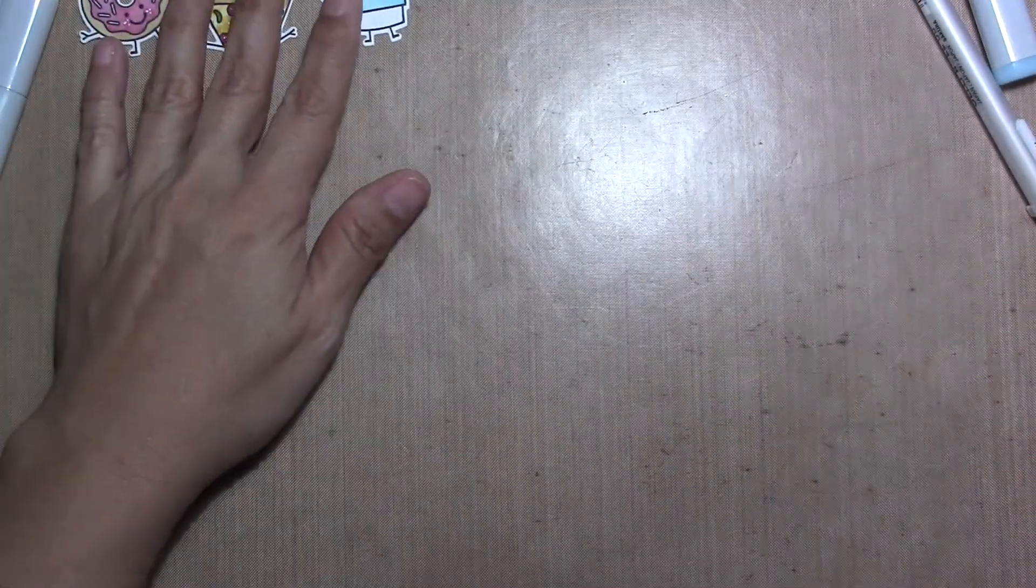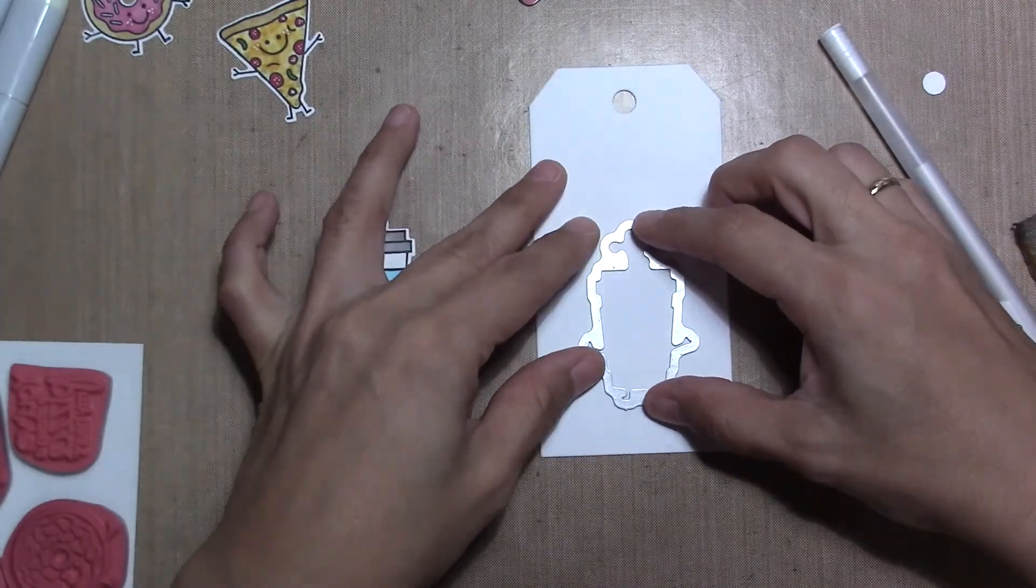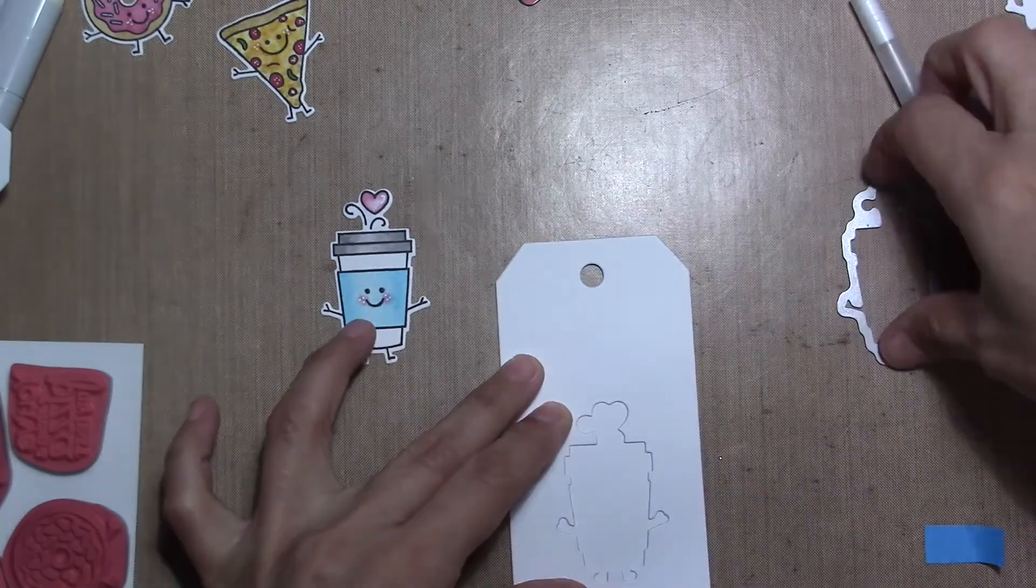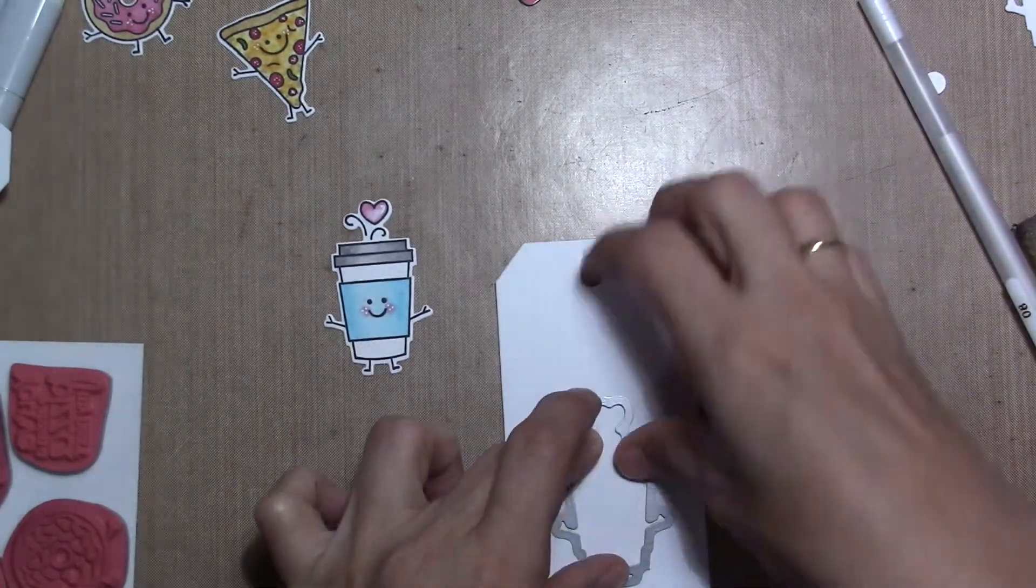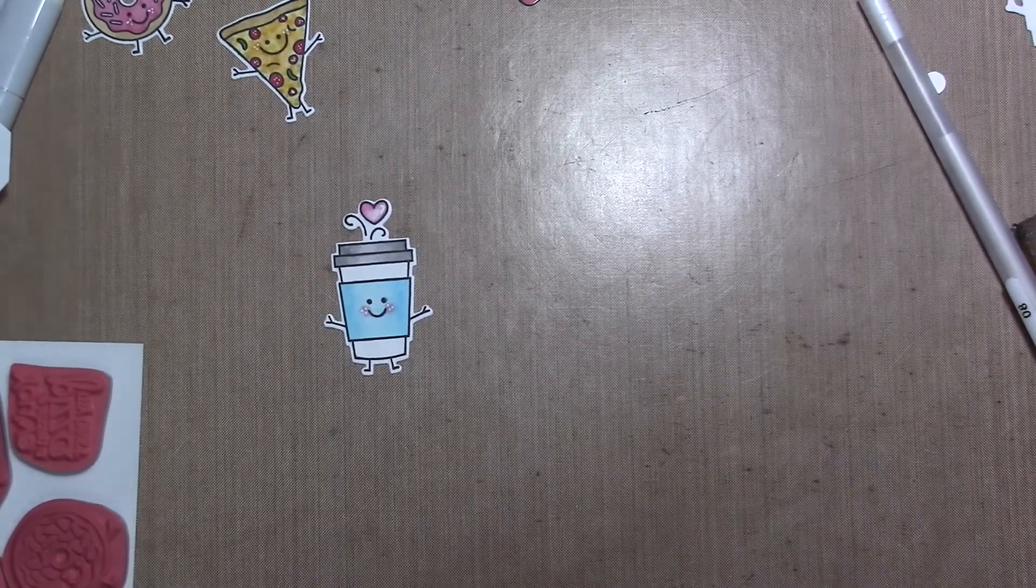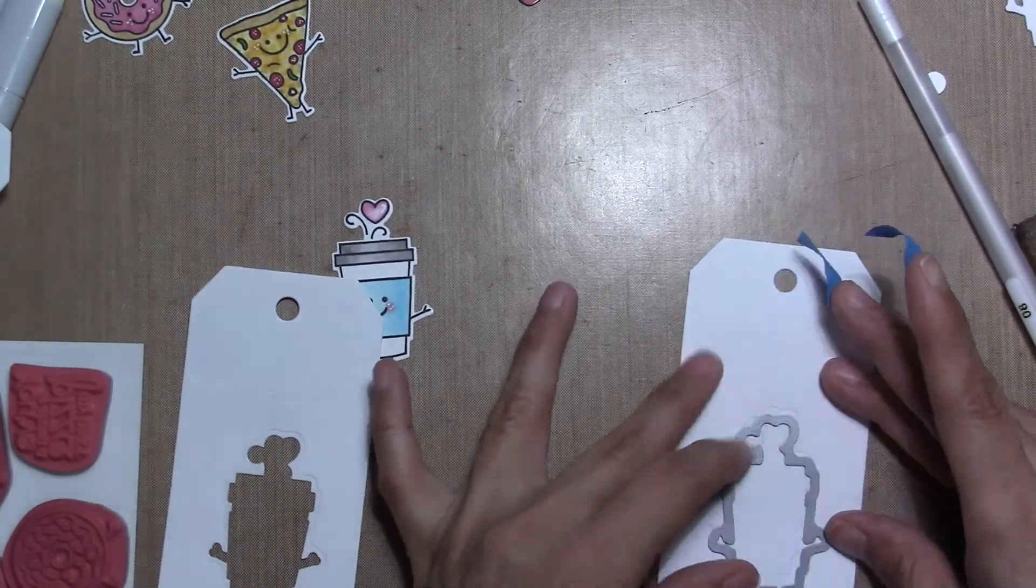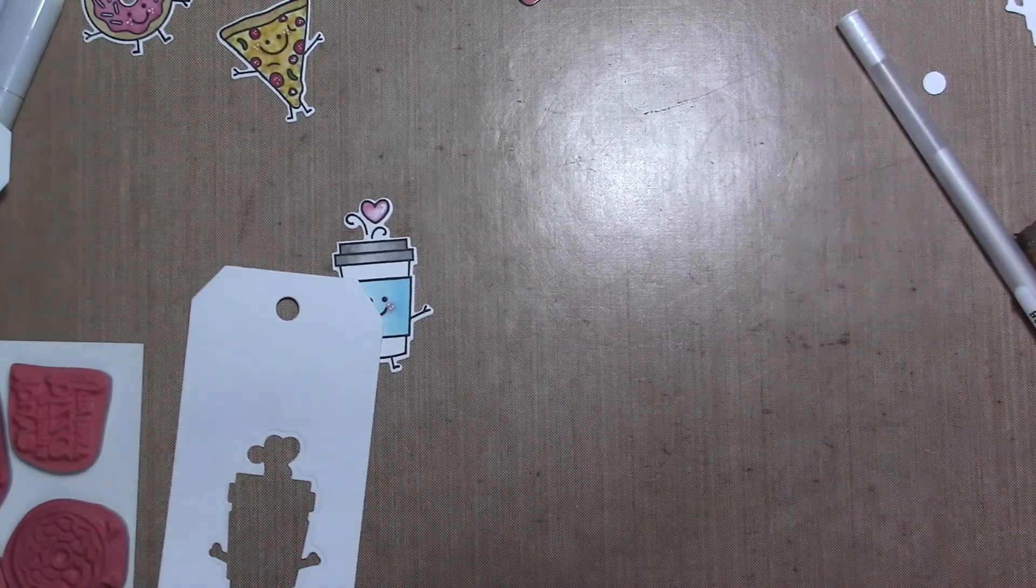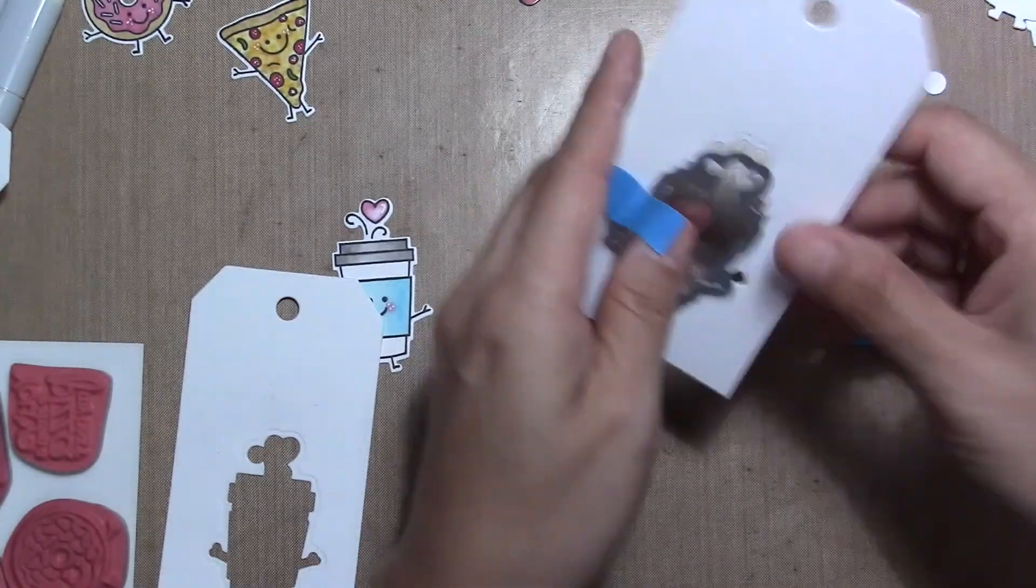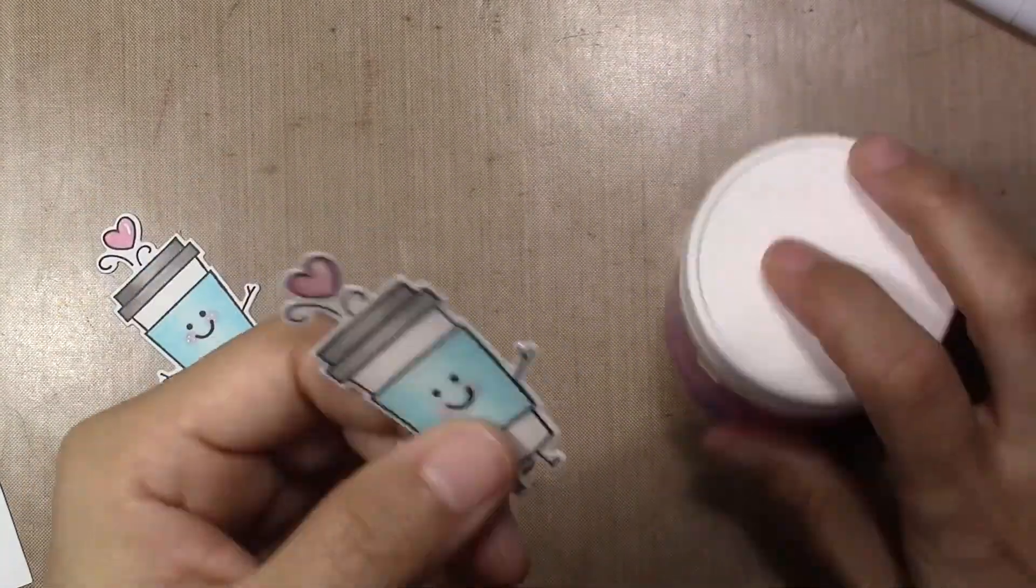After I finish cutting them I'm going to cut several tags in white and in black and in the tag I'm going to cut the shape with the same die-cut of the stamp. In this case it's the coffee cup. I'm going to cut it in white cardstock and I'm going to leave one without cutting.